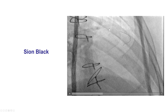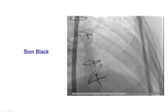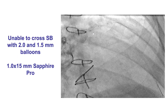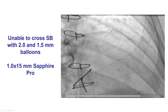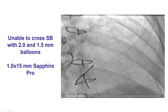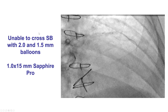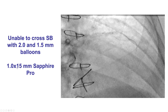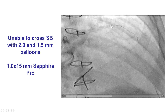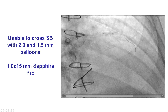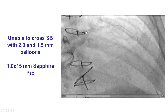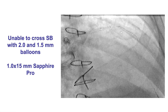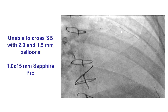After the diagonal was rewired, the jailed wire was removed. The next step was to deliver a balloon and perform the first kissing inflation, but unfortunately the balloons would not cross into the diagonal branch. Smaller balloons were tried — 2.0 and 1.5 mm — and did not succeed. The 1.0 Sapphire Pro, which is the lowest-profile balloon currently in the U.S., was then tried, and it did work in this case. If it hadn't worked, another option would have been to rewire, as the wire course through multiple stent struts may be why advancing a balloon into the side branch is challenging.